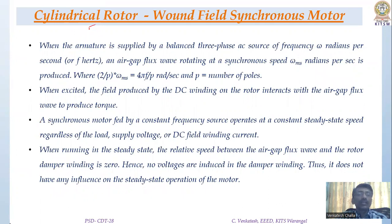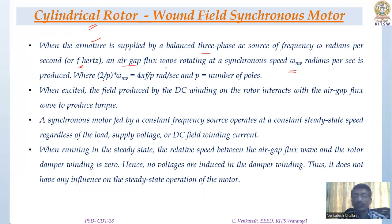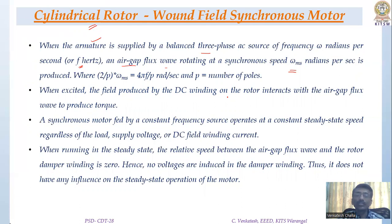When the armature is supplied with the three-phase AC source at frequency f hertz, an air gap flux wave rotating at synchronous speed omega_ms radians per second is produced. When the three-phase stator winding is connected to the supply, the three fluxes interact and produce a rotating flux at synchronous speed, given by omega_ms = 4πf/P. The field produced by the DC winding on the rotor interacts with the air gap flux to produce a torque.